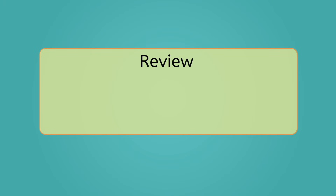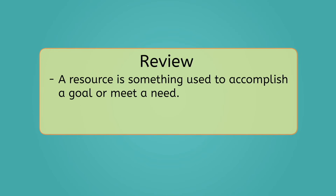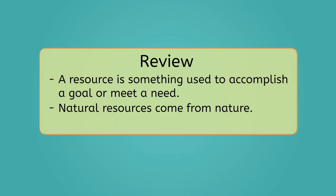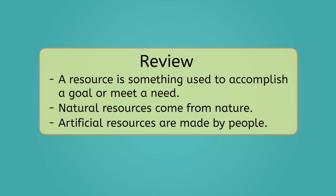My garden is planted, and I've got all my natural and artificial resources identified. I think I'm ready to officially enter my garden for judging. While we wait to hear the results, let's review everything we've learned today. A resource is something used to accomplish a goal or meet a need. Natural resources come from nature, like trees, water, and oil. Artificial resources are made by people processing and combining natural resources into something new. Be sure to check out the activities and practice questions that go with this lesson.